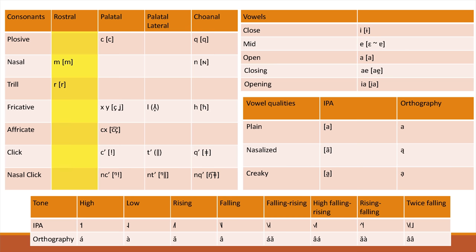Instead of labials, we have rostrals, from rostrum meaning beak. I've heard crows make trill-like sounds, and even if they don't do them with their beak, cranes definitely do, so it's an avian possibility. Crows also seem to make more creaky sounds sometimes, so I added a distinction of creaky voice. Birdsong also relies a lot on tone, so I added a lot of distinctions there as well.